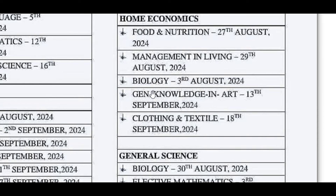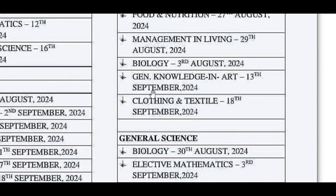For Home Economics students: Food and Nutrition — 27th August 2024; Management in Living — 29th August 2024; Biology — 3rd August 2024; General Knowledge in Arts — 13th September 2024. These are the theory papers. Clothing and Textiles will be written on 18th September 2024 and 19th August 2024.